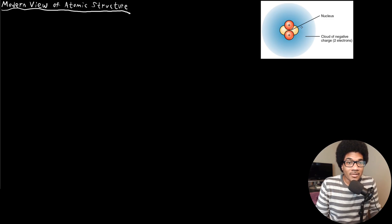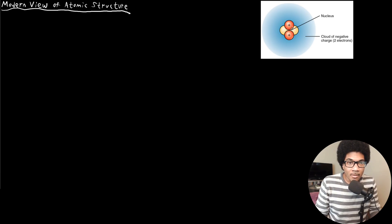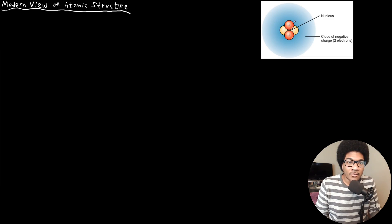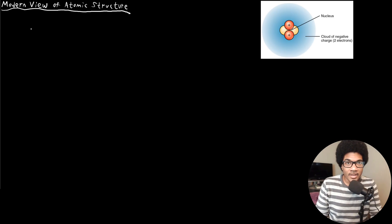Basically, the atom is composed of a nucleus — we saw this in Rutherford's experiment — a densely packed pocket of positive charge. But in this nucleus there is not just positive charge; there are also neutrally charged subatomic particles. The negatively charged particles exist in a cloud surrounding the nucleus. Our understanding of atomic structure centers primarily around three subatomic particles.